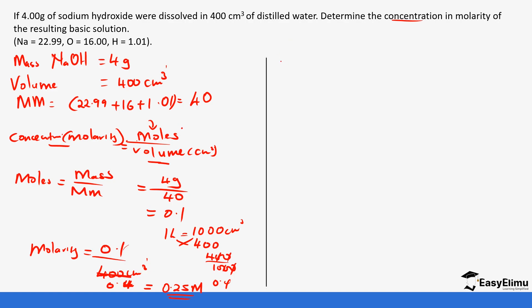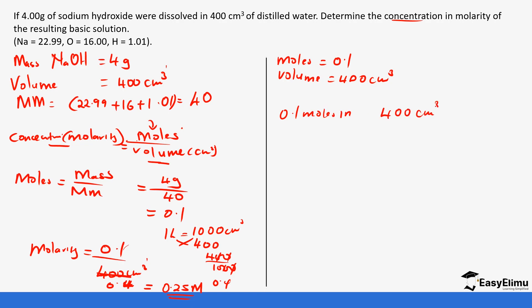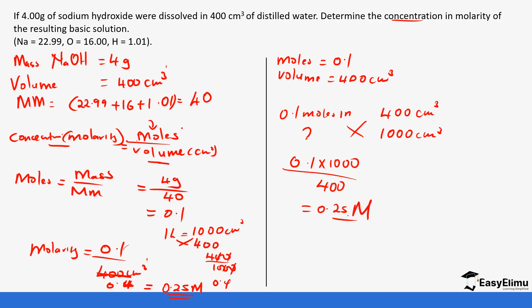Now let's look at the first principle method. The number of moles is 0.1 and the volume is 400 cm³. First principle: 0.1 moles are dissolved in 400 cm³. Ask yourself — if 0.1 moles are dissolved in 400 cm³, what about in 1000 cm³? Cross-multiplying gives 0.1 times 1000 over 400, which gives us the same value of 0.25 M. I'll go back to the first principle method as we continue our calculations.